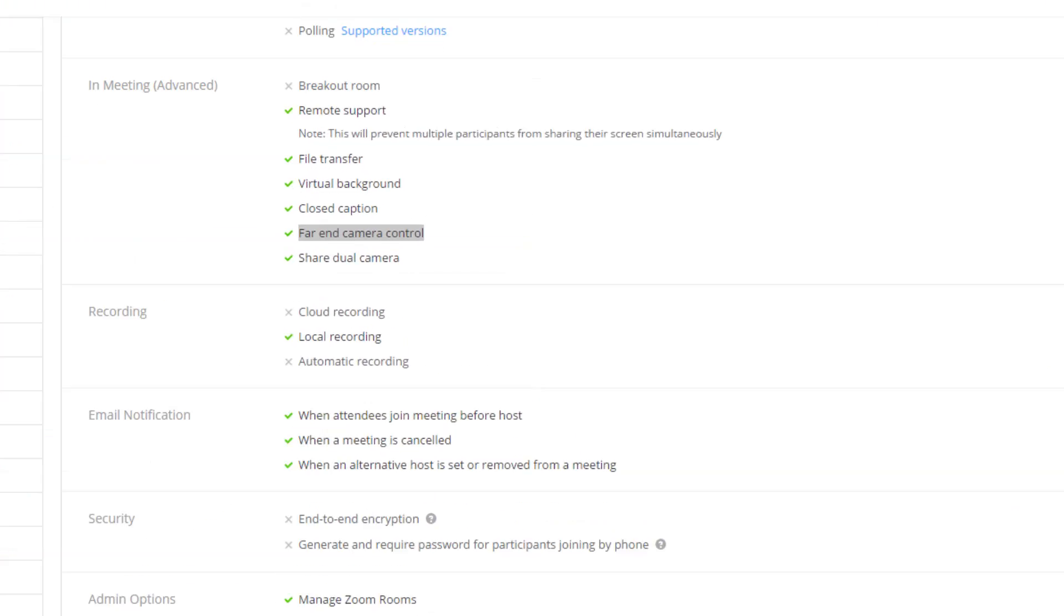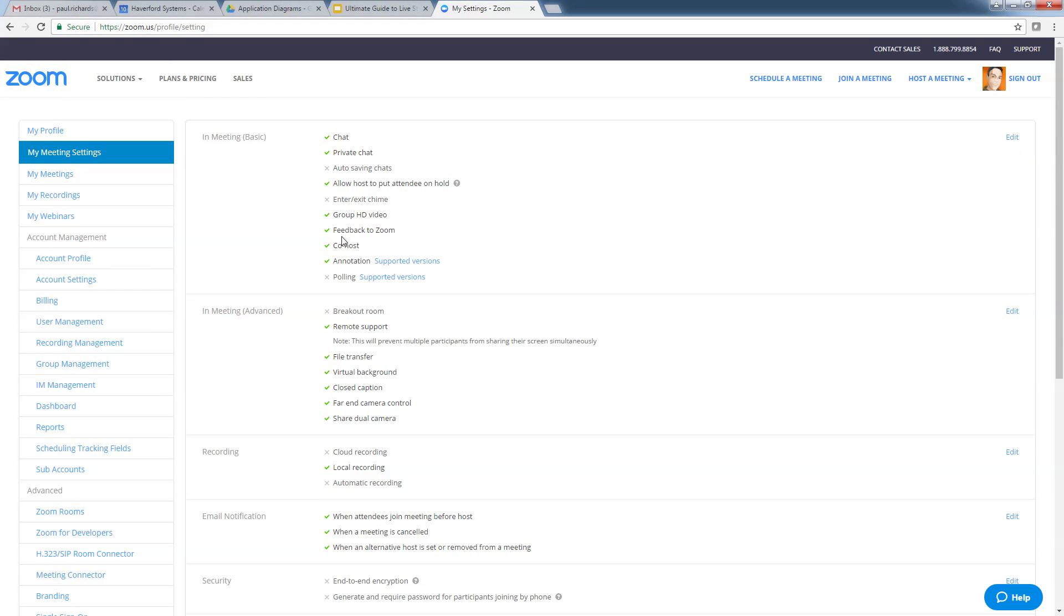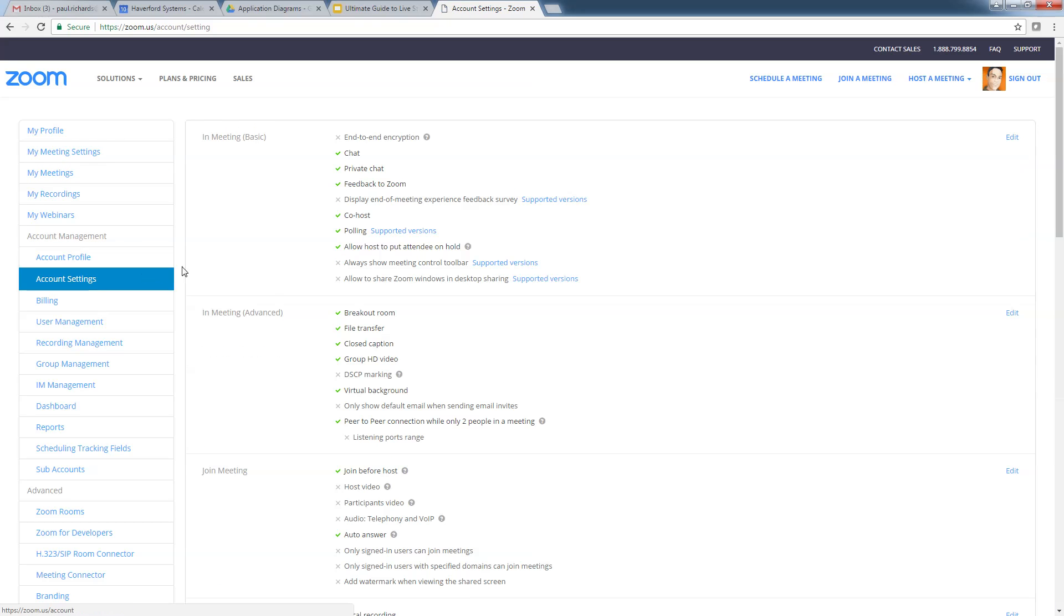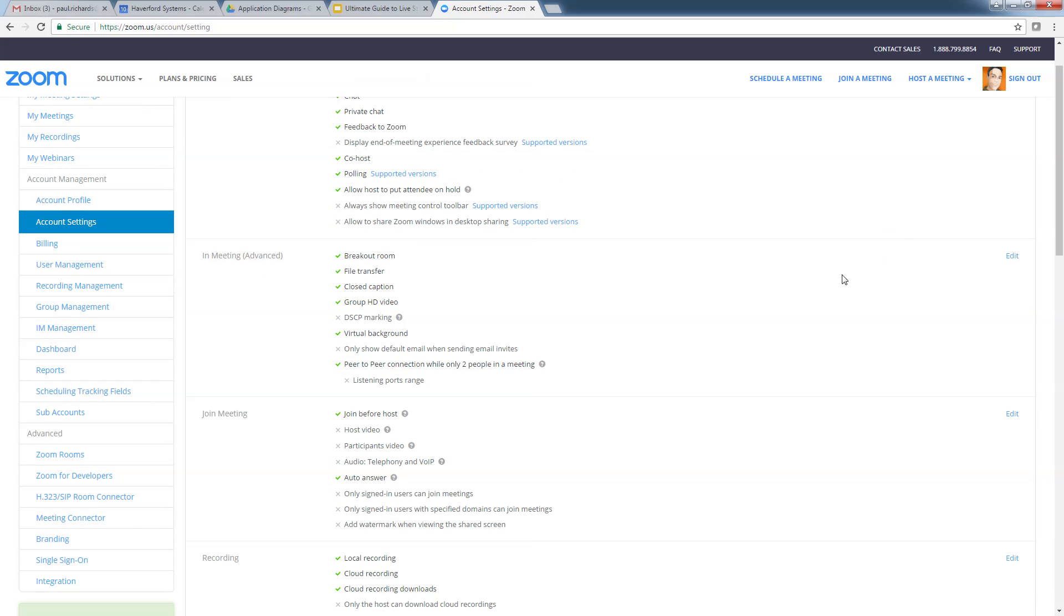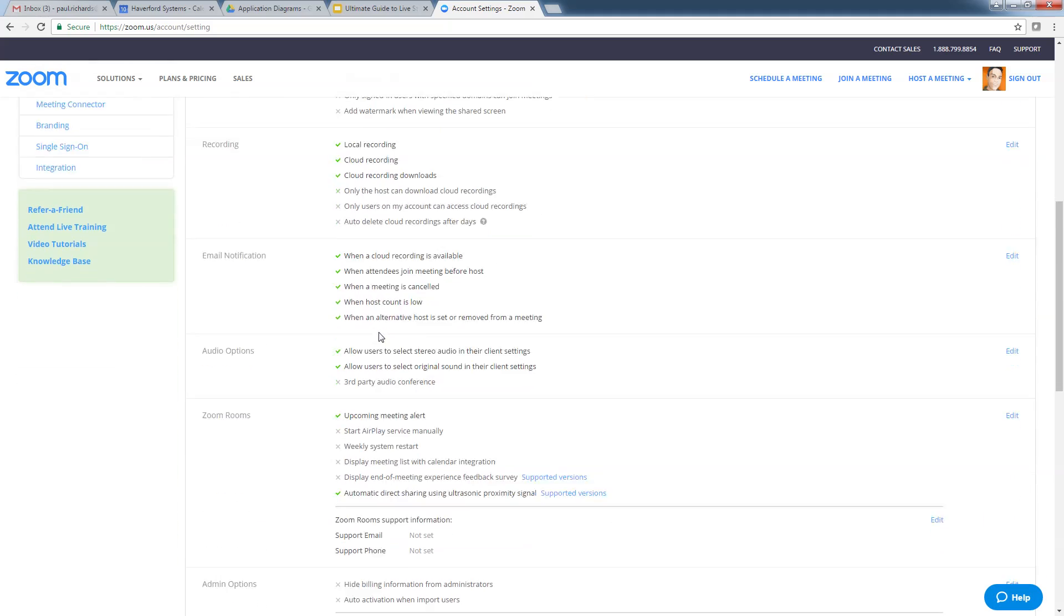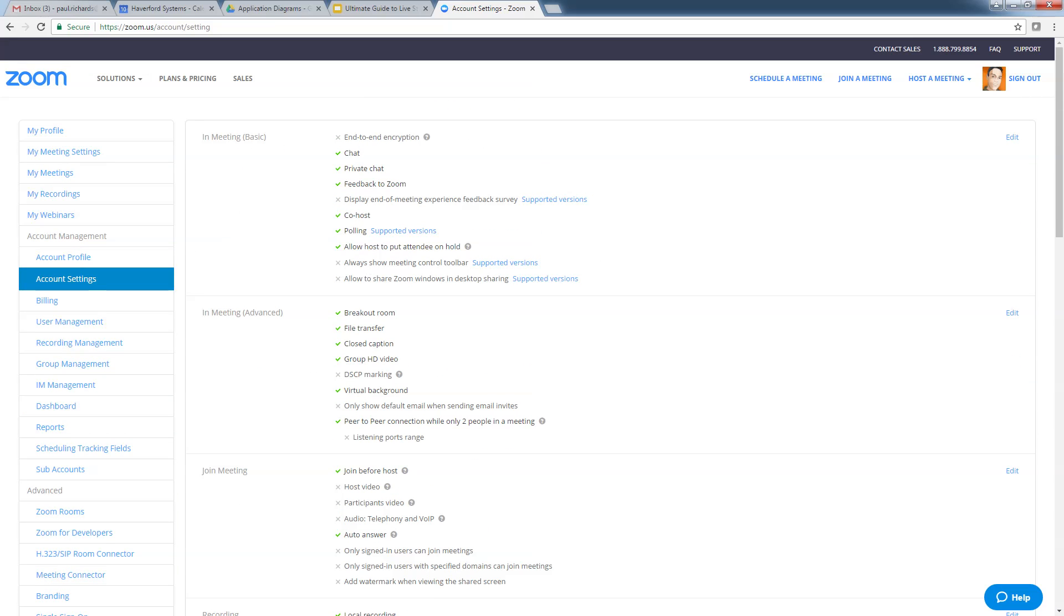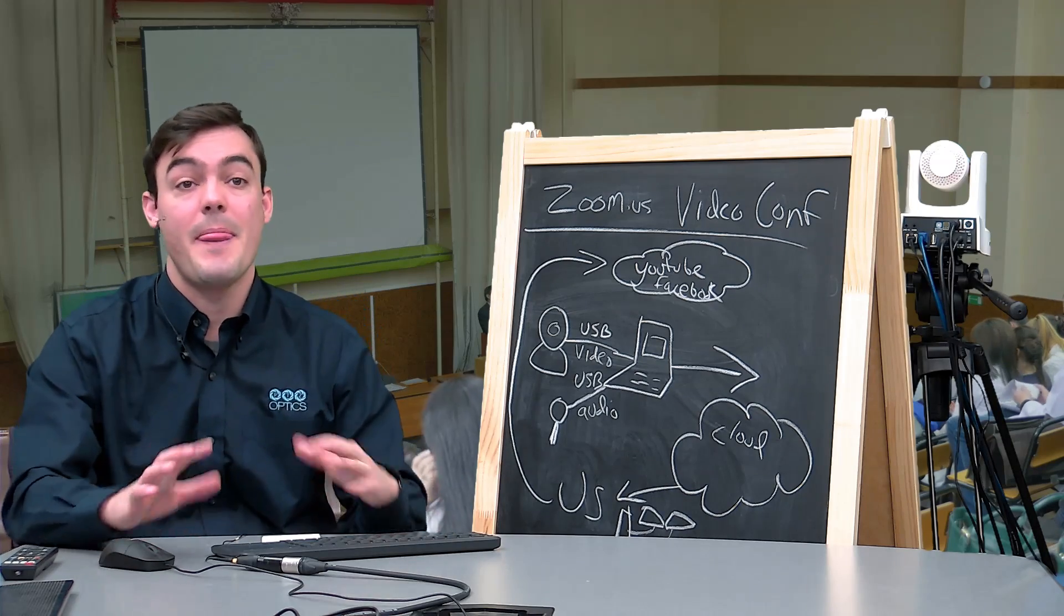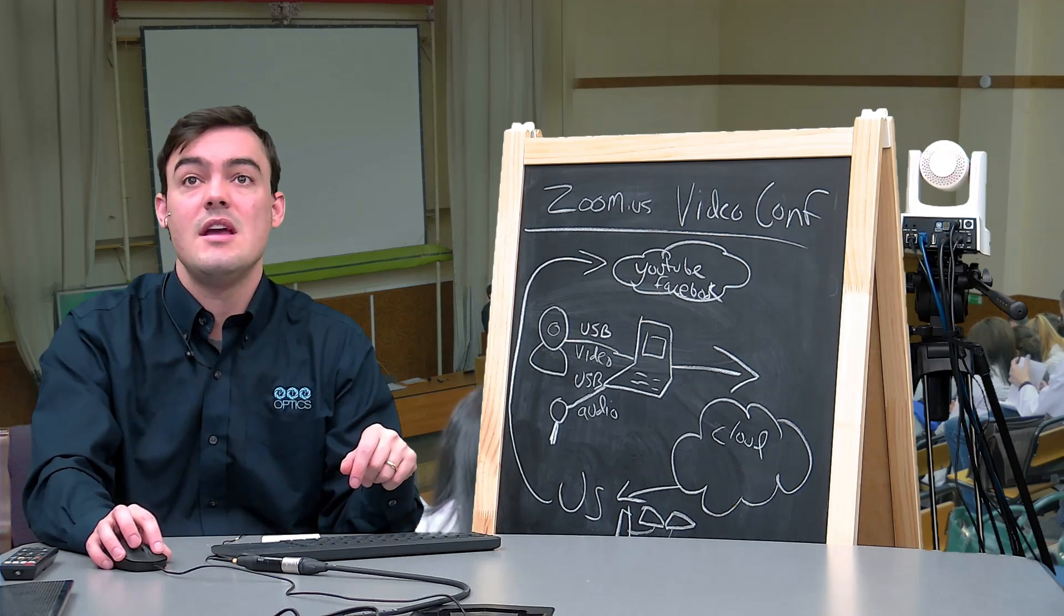Basically, the far-end camera control feature needs to be enabled by your admin. So your admin, whoever that may be, is going to need to enable far-end camera control for this to work, or else you're not going to see that option. In account settings there's a whole bunch of settings in here, but you have to ask your admin to enable far-end camera control. That's it. So easy to do.